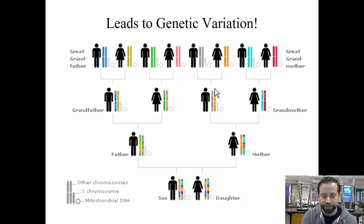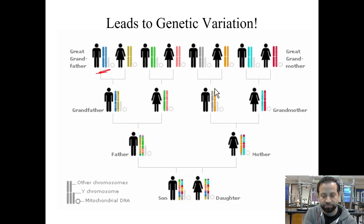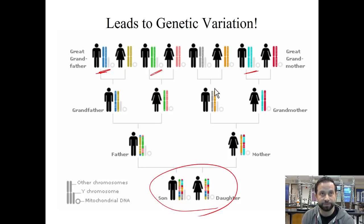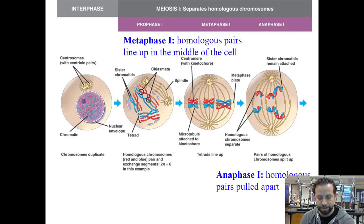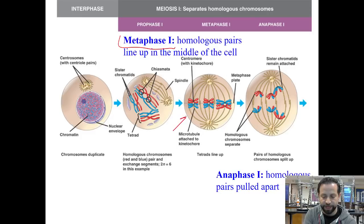Here's what crossing over leads to: genetic variation. Look at the great-grandfather — his chromosomes are blue. Within a couple of generations you see turquoise, green, and so on. Crossing over leads to genetic variation, which is really what you want. We're still in meiosis I. In metaphase I, homologous pairs line up in the middle. In anaphase I, homologous pairs are pulled apart from each other.